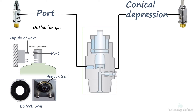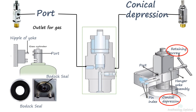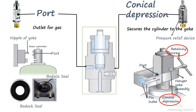The conical depression is situated on the opposite side of the port and is positioned above the pressure relief device. It is present only on cylinders designed for the anesthesia machine, as it fits into the retaining screw of the hanger yoke. It must be distinguished from the pressure relief device, as attaching the screw to the pressure relief device can damage it.